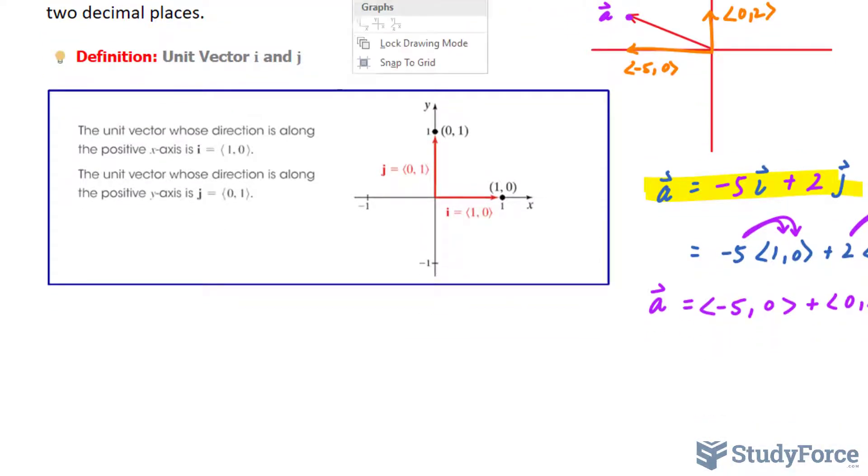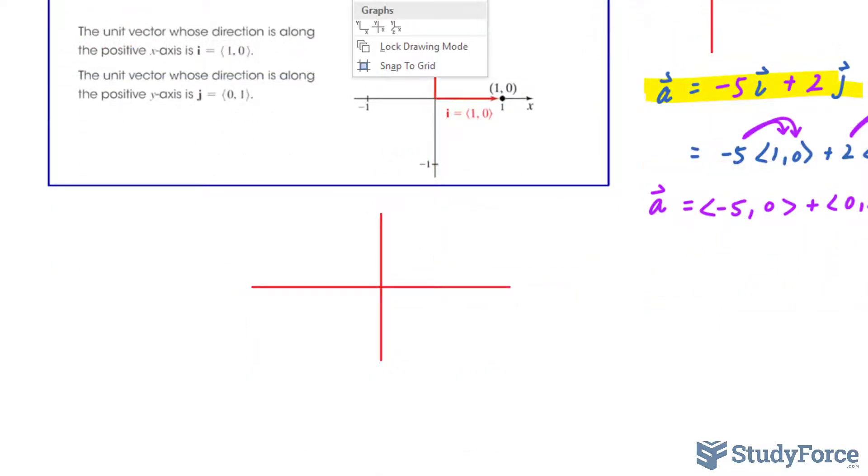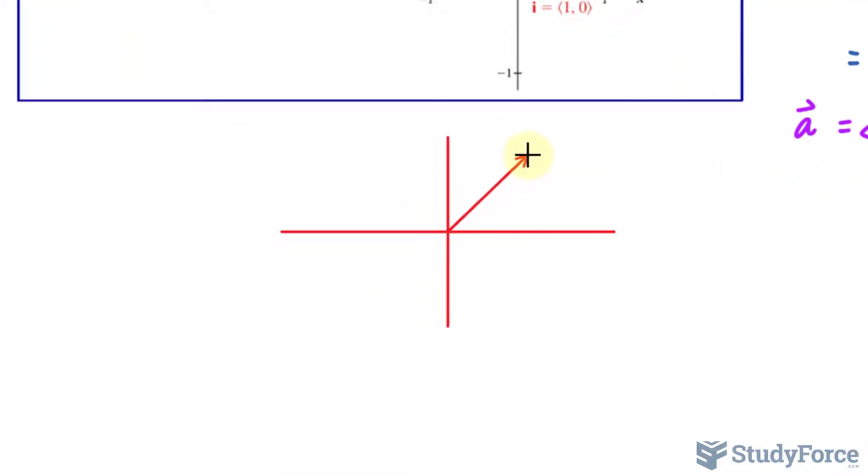Let's go ahead and plot what this would look like on an xy plane. So on an xy plane, we would have a terminal side, a vector essentially, extending from the origin, and it would make 50 degrees with the horizontal.